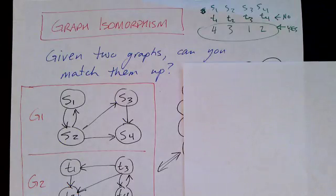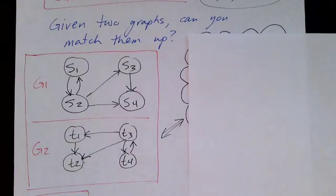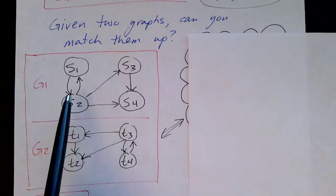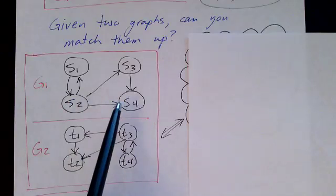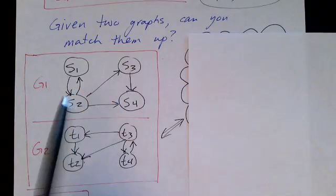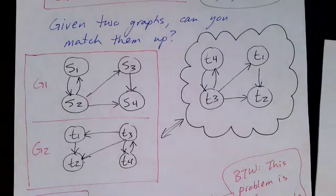Here's another interesting problem: the graph isomorphism problem. The problem is: given two graphs, can you match them up? Here's a graph G1 and here's a graph G2. They have the same number of nodes and the same number of edges, but can you match them up?